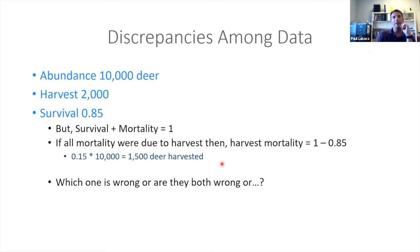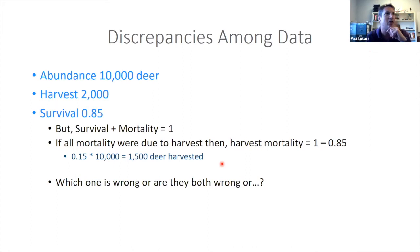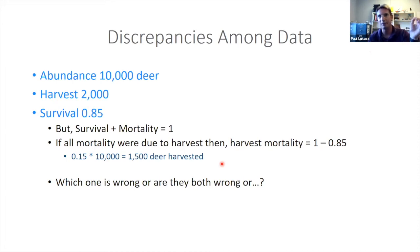If we don't have a way to link estimates in an explicit model, we have to do our own mental math about how to make them agree. I might come along and bump down survival a little bit and bump down harvest a bit. Josh might think I'm wrong and increase population size because he was at the check station and saw a lot of deer go through. Everyone can take their own mental model and adjust it however they want. But with an integrated population model that links it all, there's an explicit set of assumptions laying out how we handle these data discrepancies, and everyone can see the same set of logic.